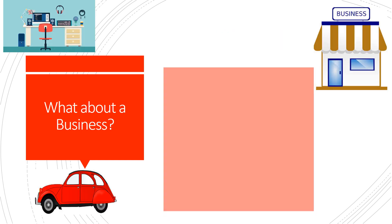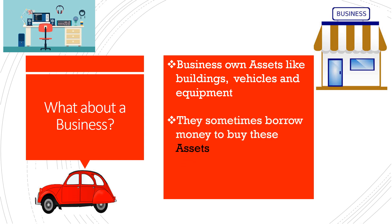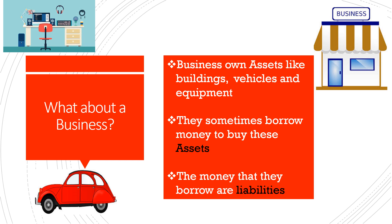Let's talk about a business now. A business also owns assets like buildings, equipment, and vehicles. The business also has money in the bank — those are assets that the business owns. The business sometimes needs to borrow money to buy a building or to buy a car, and that would be liabilities for the business. So a business has assets and liabilities just like you and your parents do.